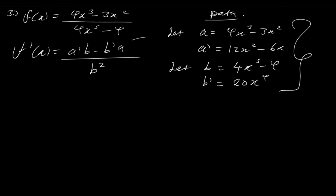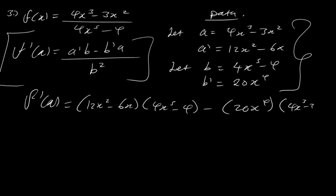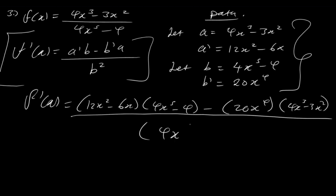Once we have these data values, we plug back into the equation. So f prime of x is equal to a prime, which is 12x squared minus 6x, times b, which is 4x to the 5th minus 4, minus b prime, which is 20x to the 4th, times a, which is 4x cubed minus 3x squared, over b squared, which is 4x to the 5th minus 4 all squared. You can leave your answer here, or you can expand it out.